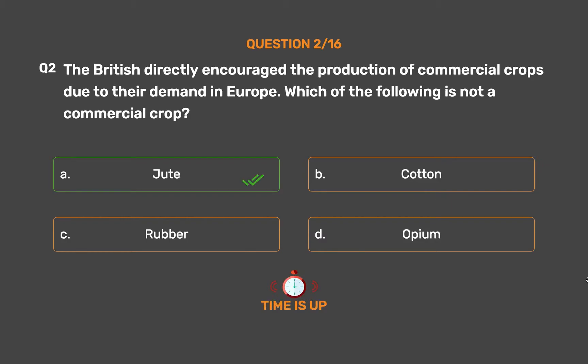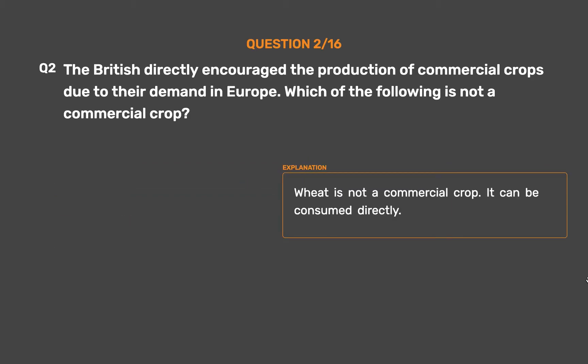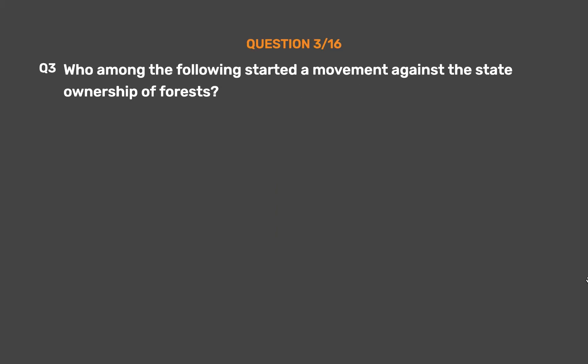The correct answer is Option A, Jute. Wheat is not a commercial crop — it can be consumed directly. Question 3: Who among the following started a movement against the state ownership of forests?